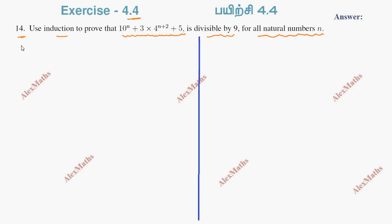If it is P(n), then we can write it. So P(n) is 10^n + 3 × 4^(n+2) + 5. If it is P(1), then 10^1 + 3 × 4^3 + 5.